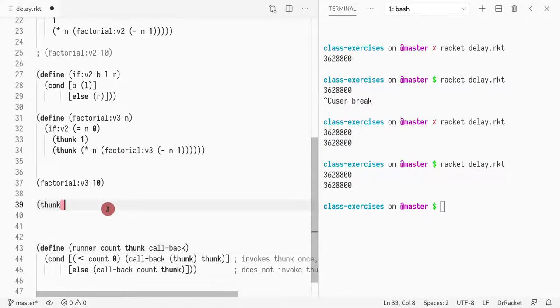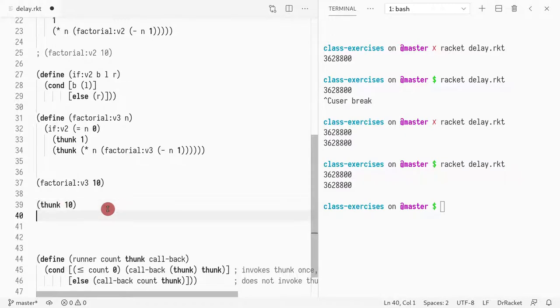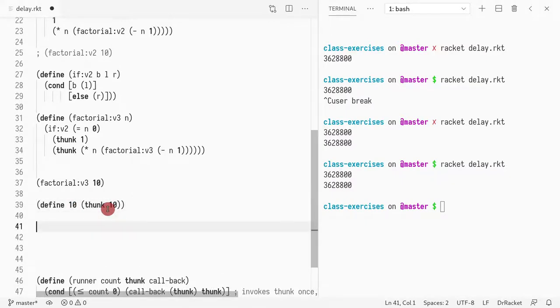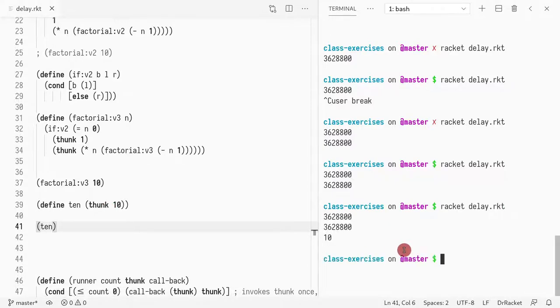Let's say I have a function, a thunk, where I return 10. I define 10. So if I call 10, I should get the result of 10. If I call this, it should get number 10 out. Let me comment this out. Now you're convinced that this works.